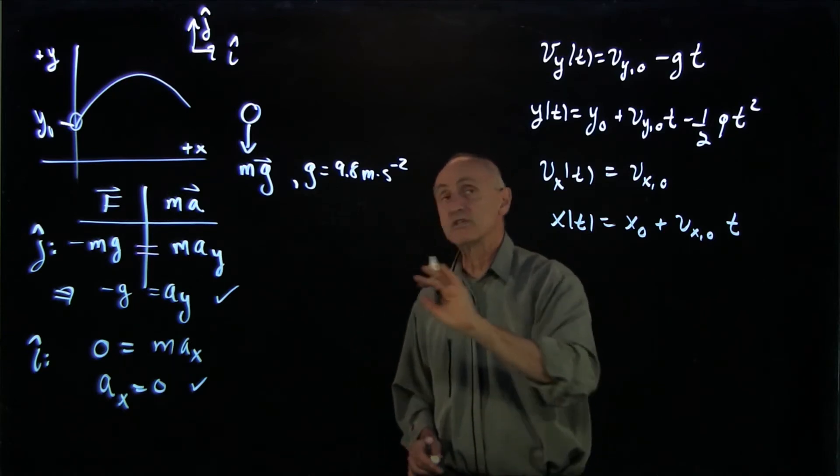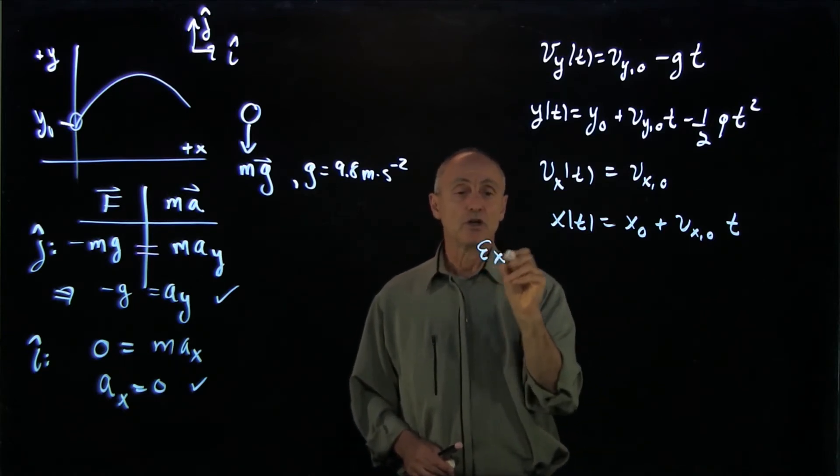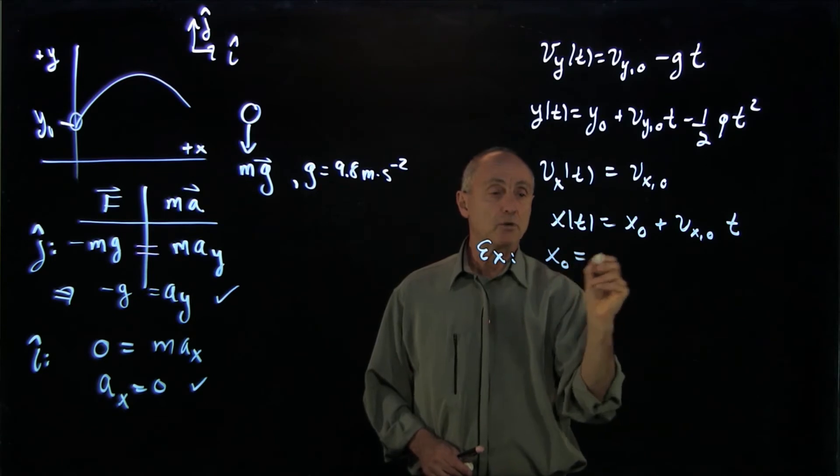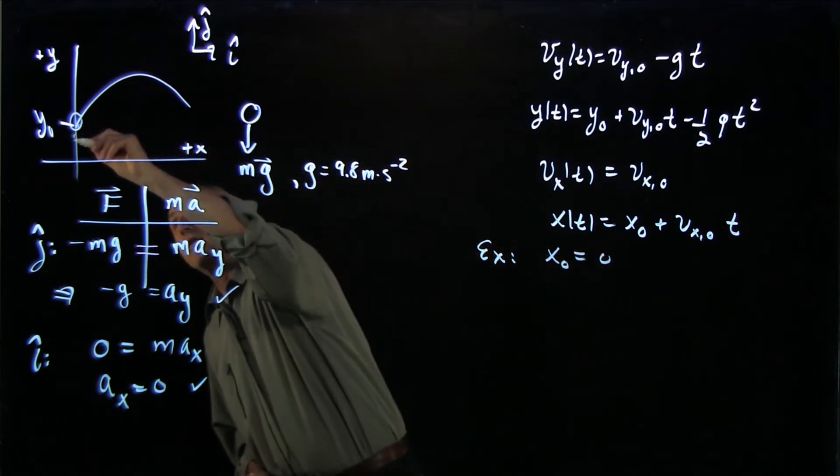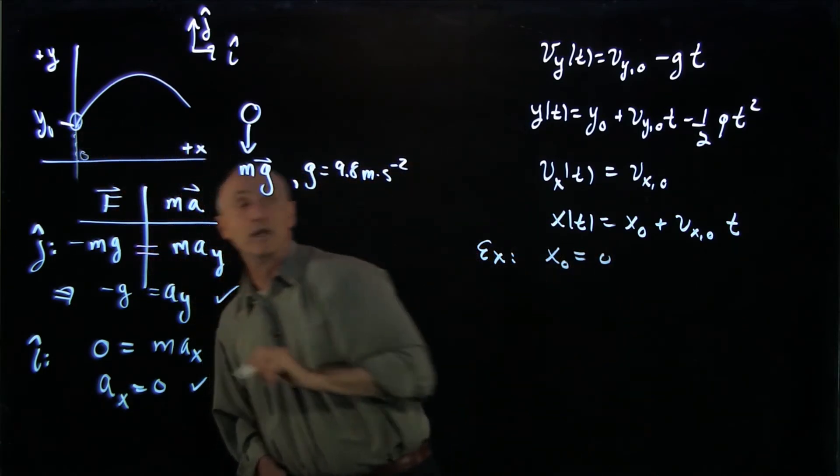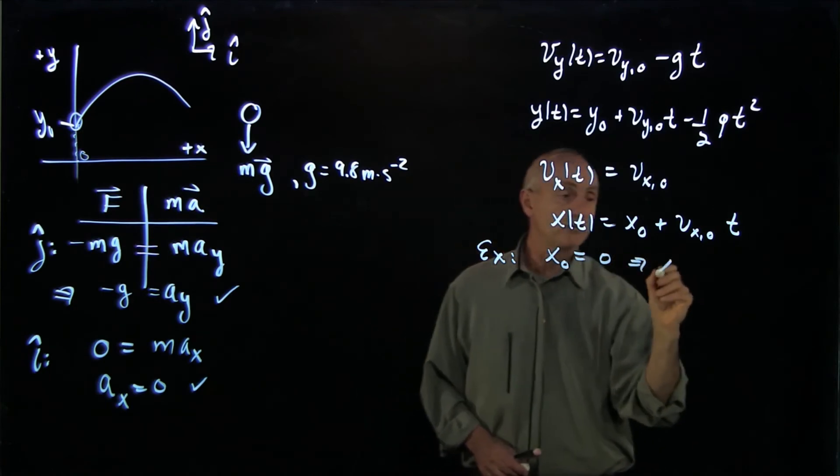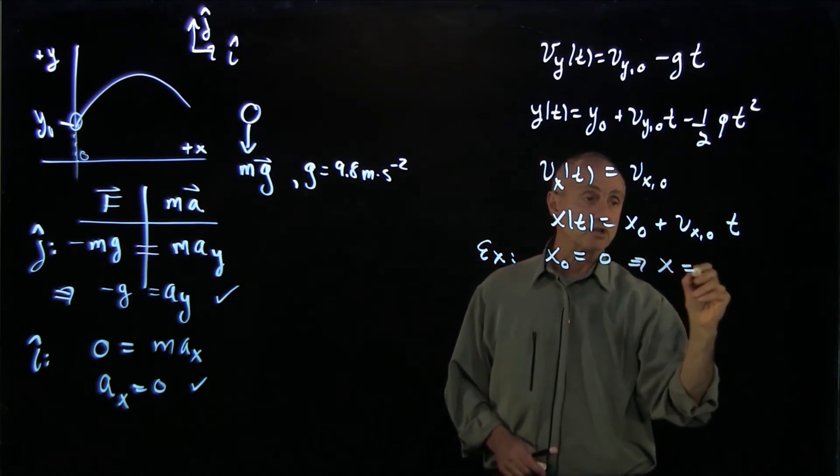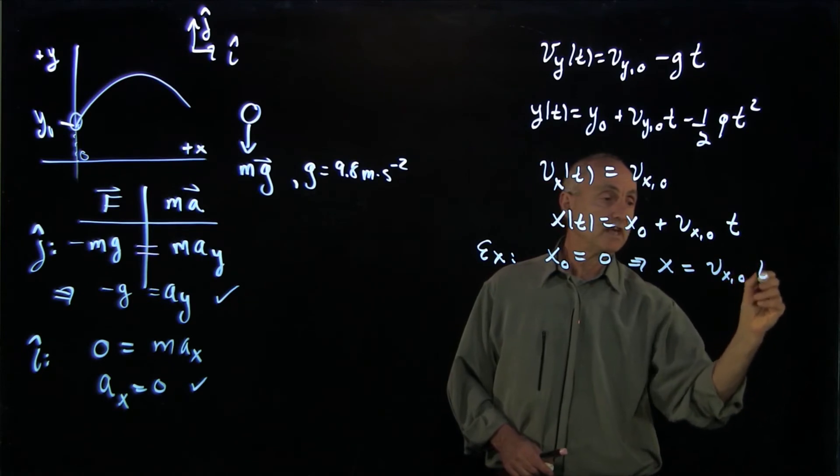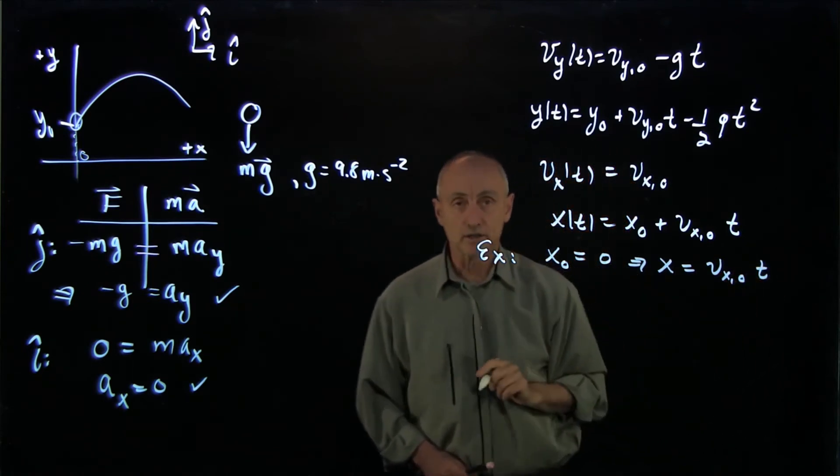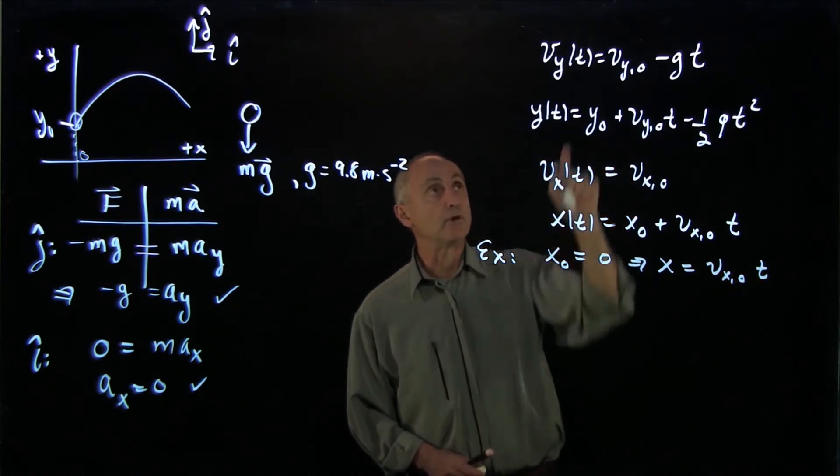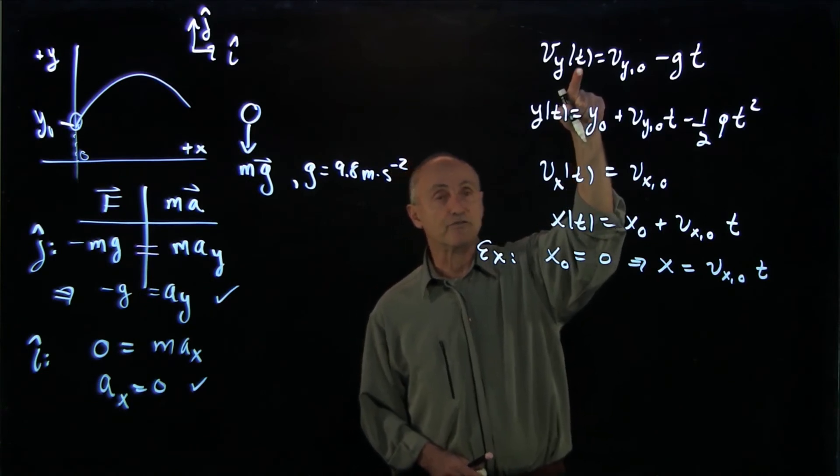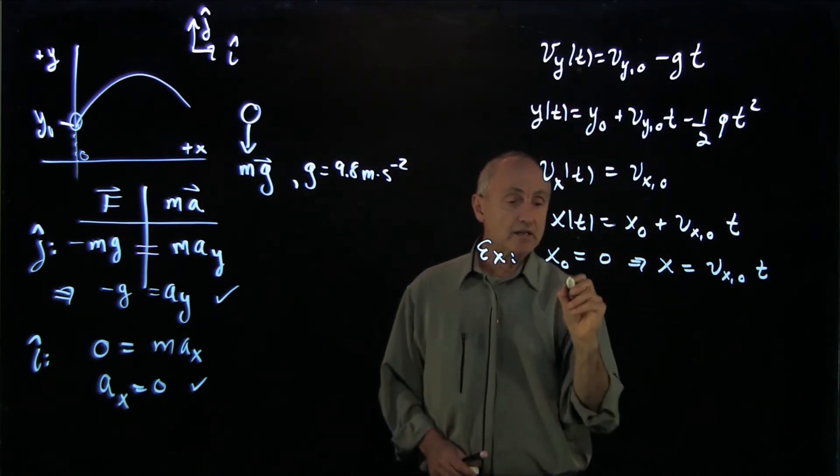Now for our particular example, it's much easier. Here we have x0 equal to 0. Notice that our object is starting at the origin, and so that tells us that x as a function of time is just vx0 t. I'm dropping the parentheses t - remember, that's not a product, it's just a function of time.